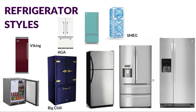Thinking briefly about refrigerator styles — refrigerators come in all kinds of sizes, proportions, and purposes. The most typical freestanding unit you can buy at any big box store has that split style with the freezer on top and refrigerator on the bottom. Another very common type is the side-by-side, with the refrigerator being larger and the freezer smaller, often with a built-in ice maker on the front.